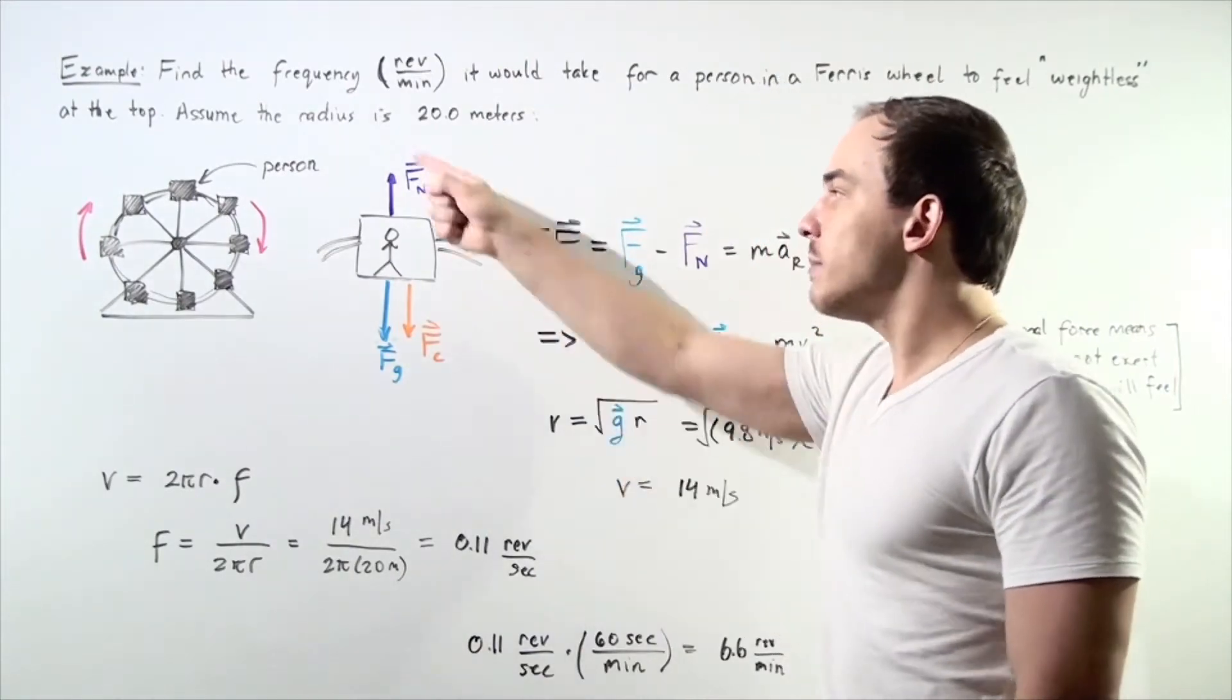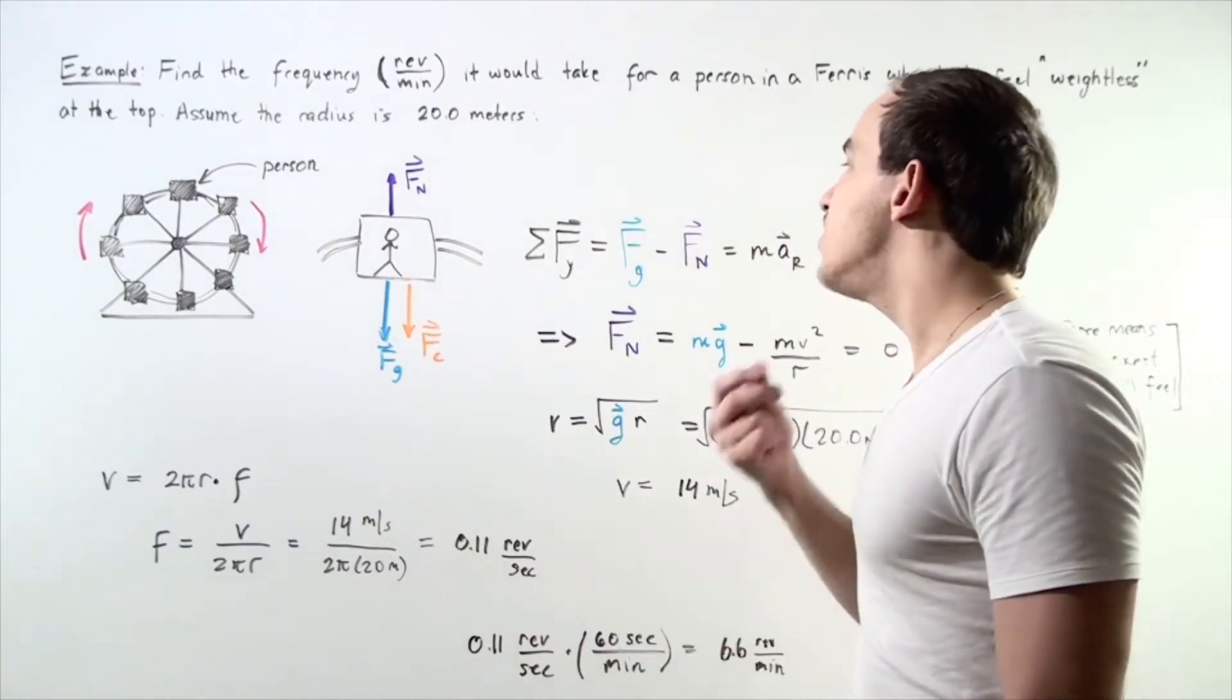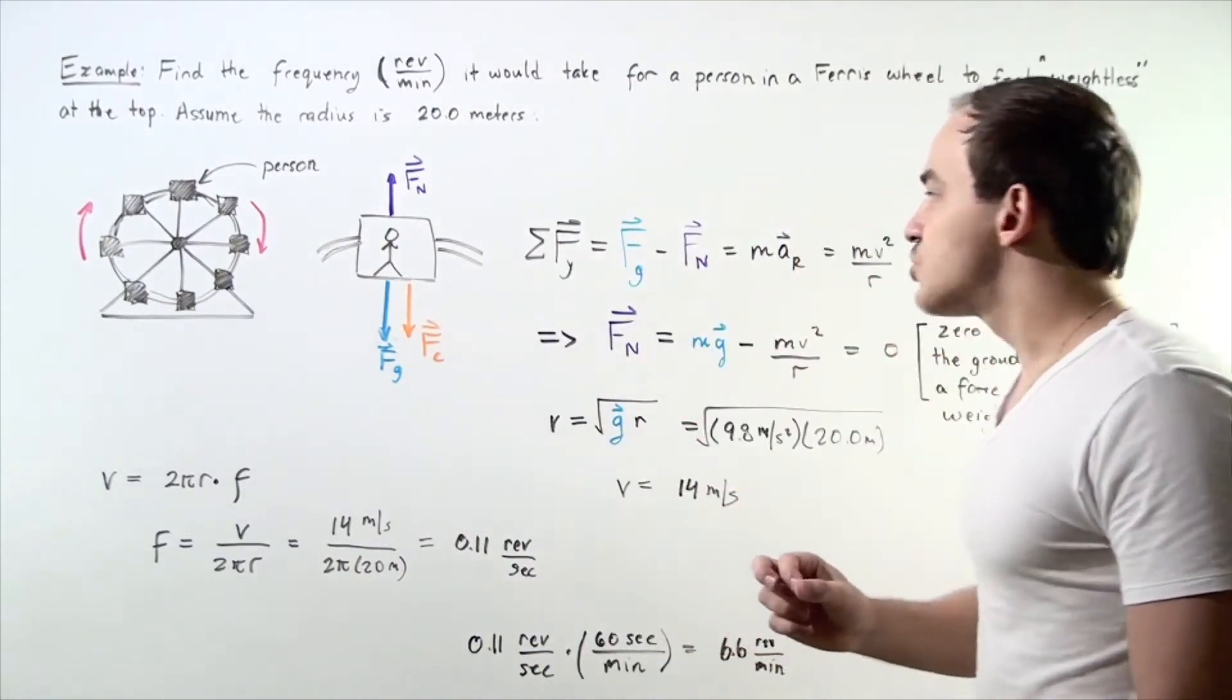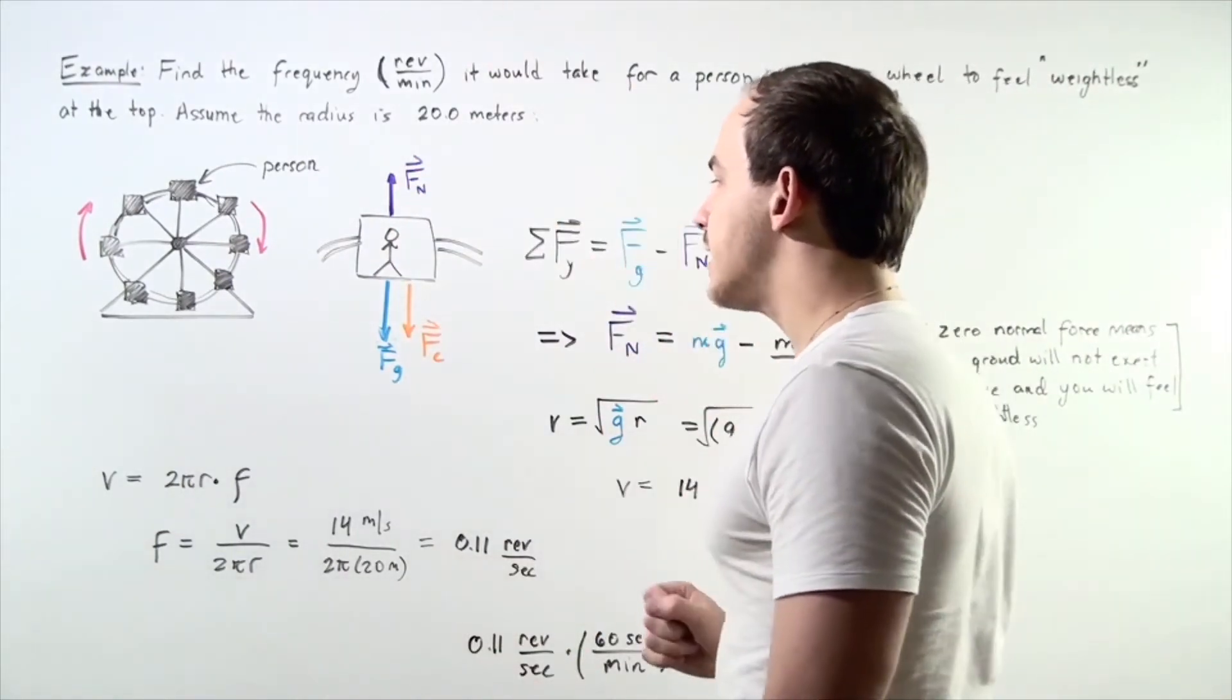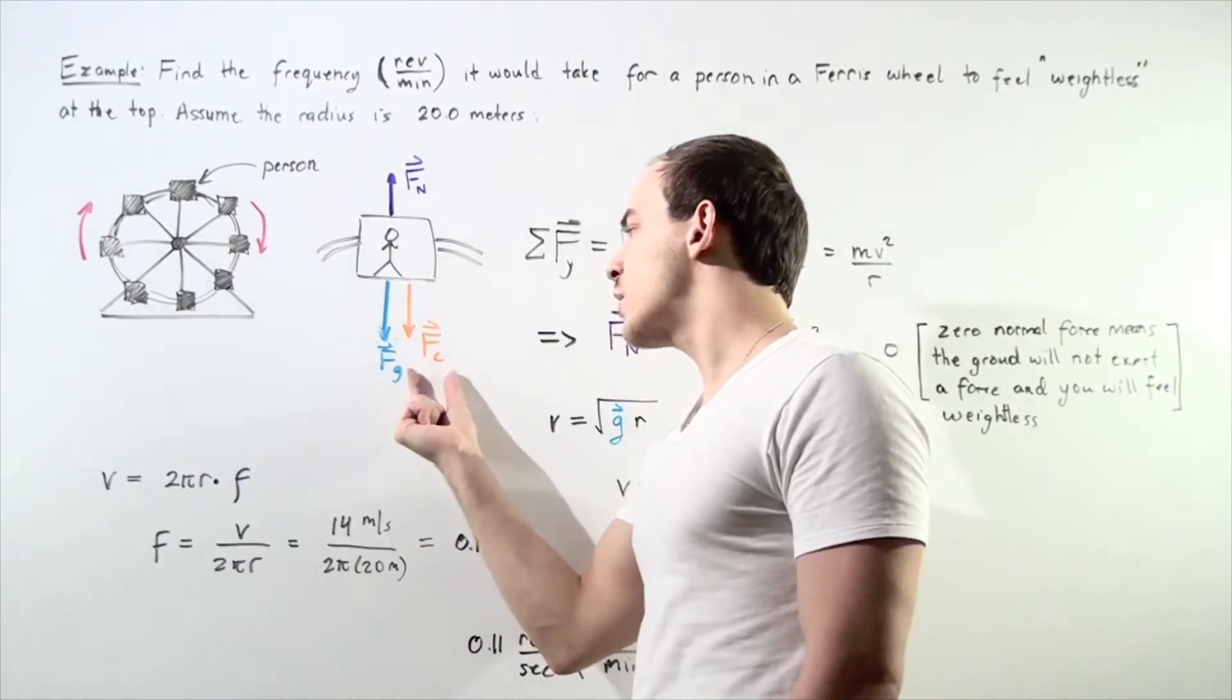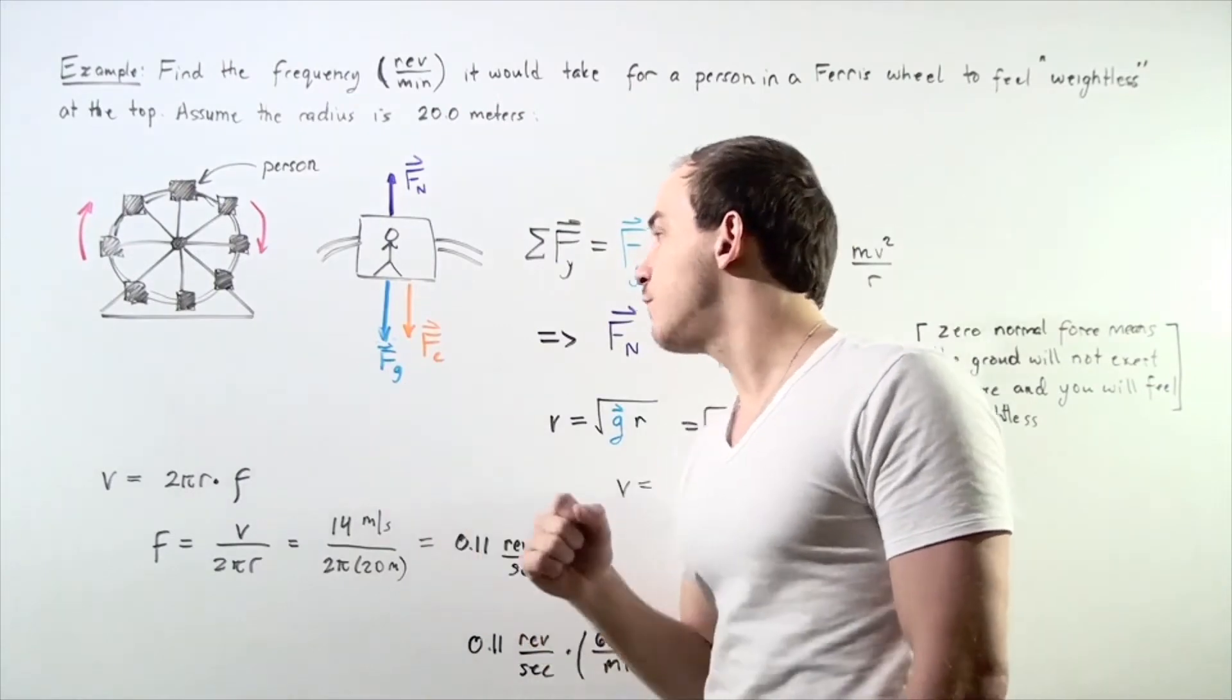We're essentially summing up all the vector forces along our y-axis and then we set the normal force equal to zero. Let's choose downward to be positive and upward to be negative. We choose downward to be positive because our centripetal acceleration is in the same direction as our gravitational force.